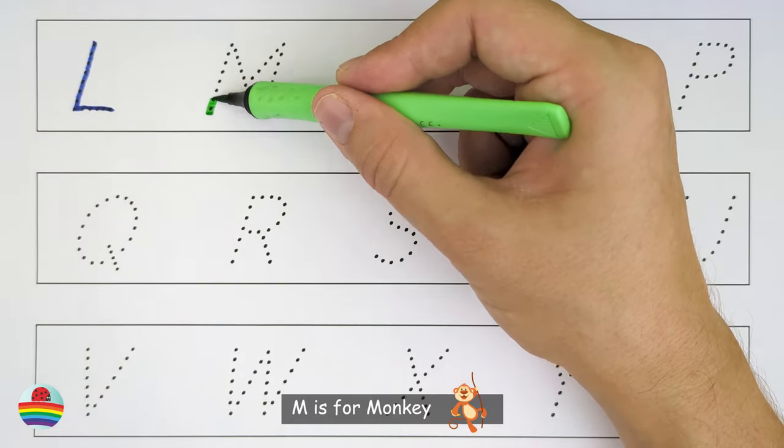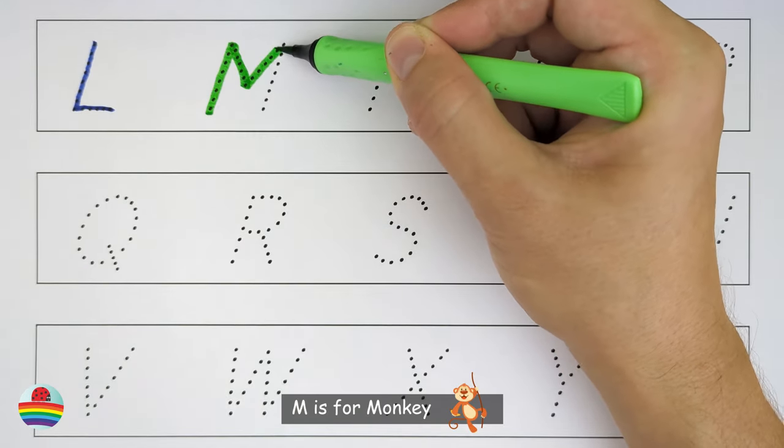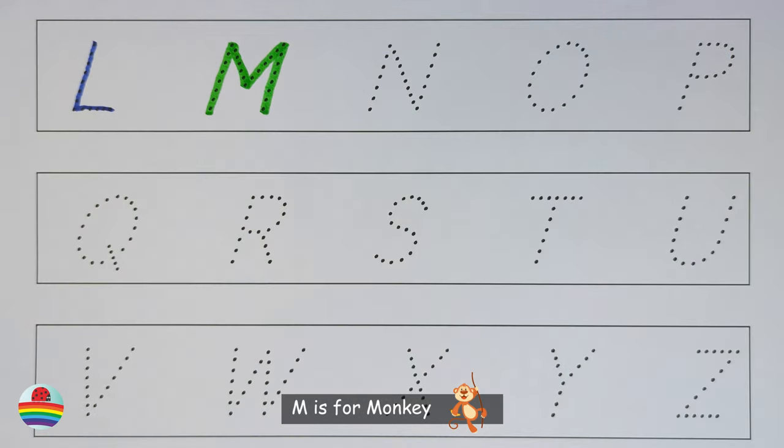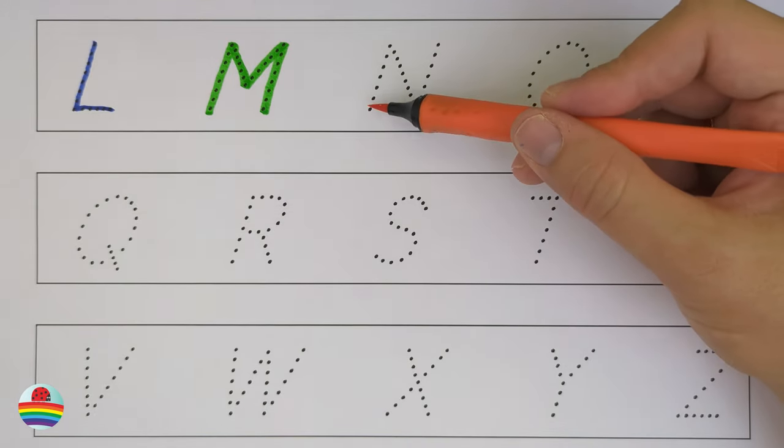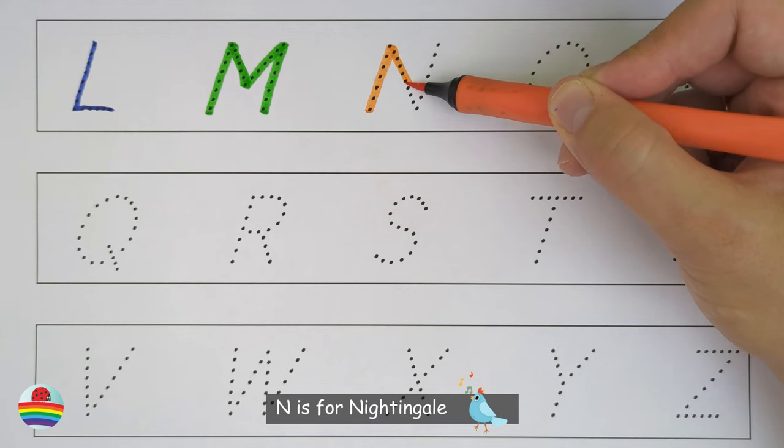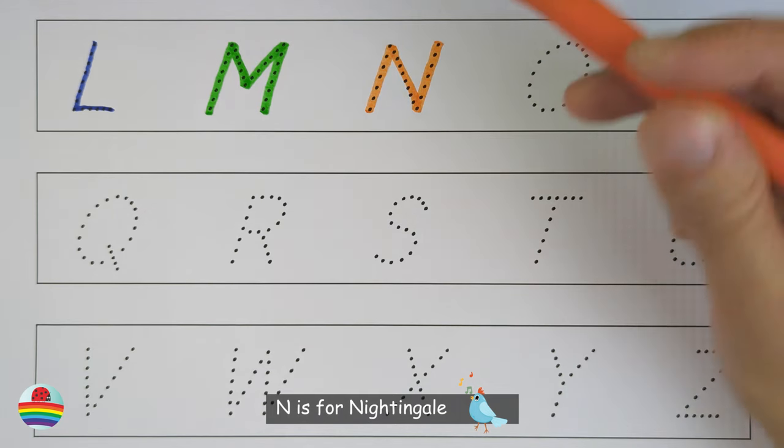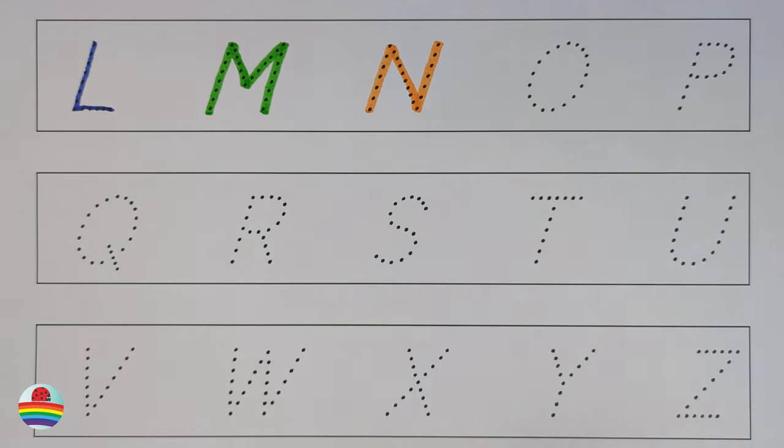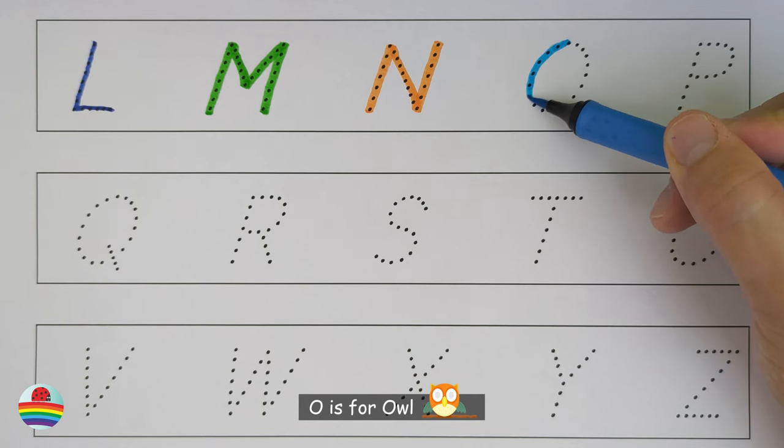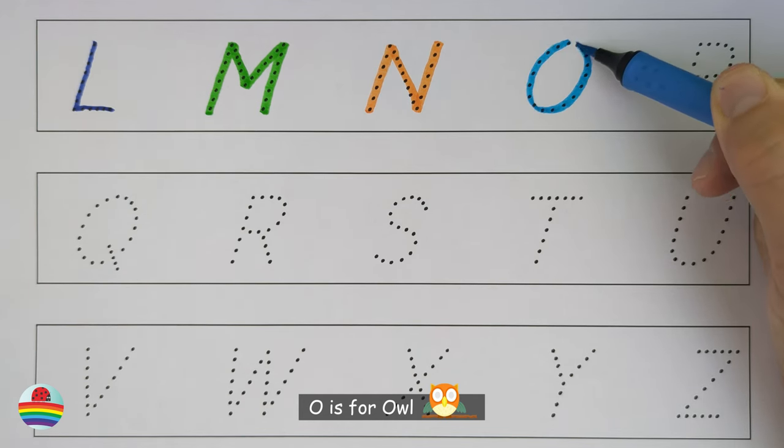M. M is for Monkey. M. N. N is for Nightingale. N. O. O is for Owl. O.